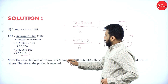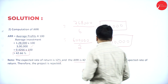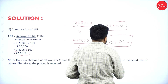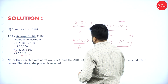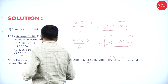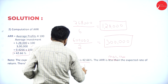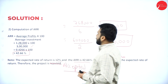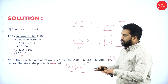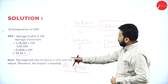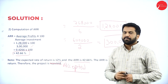The expected rate of return is 12% and the ARR is 42.66%. Since the ARR is more than the expected rate of return, the project is accepted. Because the ARR exceeds the required annual rate of return, we accept this project.